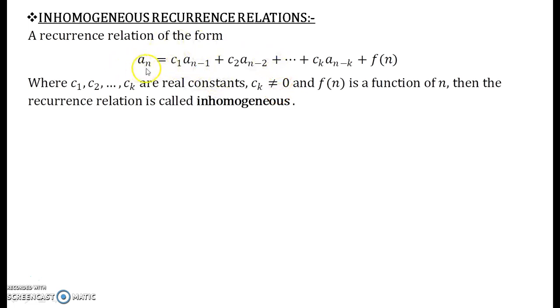Now we have already seen this part: an equal to c1 an-1 so on up to ck an-k. We have already seen this kind of recurrence relation which was homogeneous recurrence relation. The only new thing that is added over here is f of n. So let us see some examples related to inhomogeneous recurrence relation.